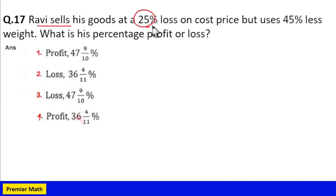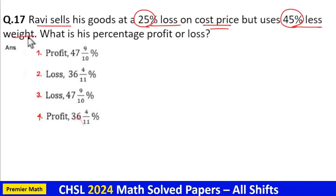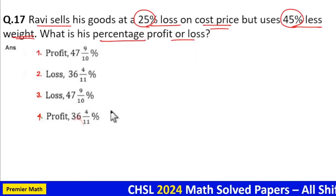When he sells his goods at 25% loss on cost price but uses 45% less weight, what is his percentage profit or loss?